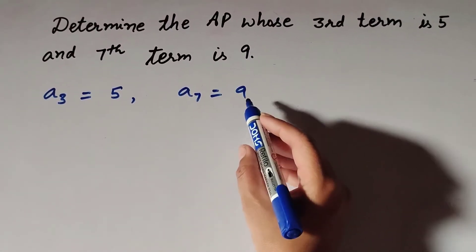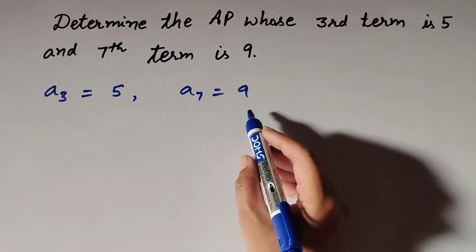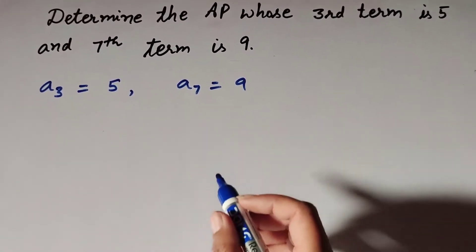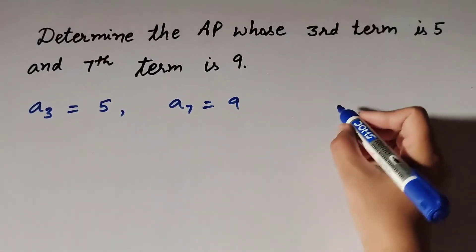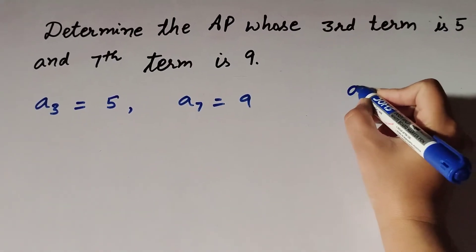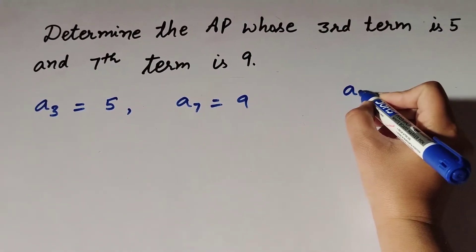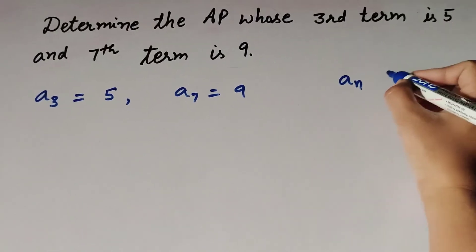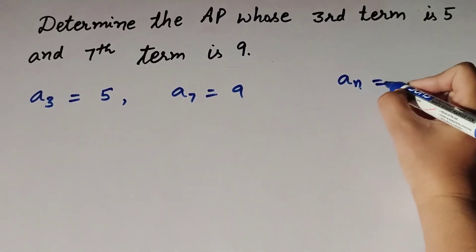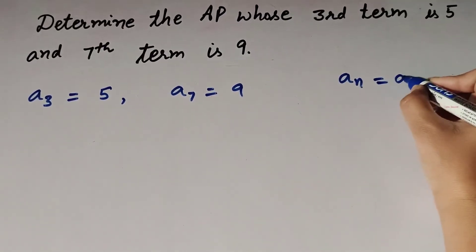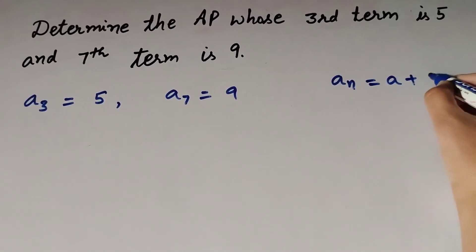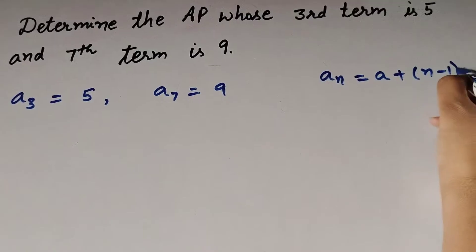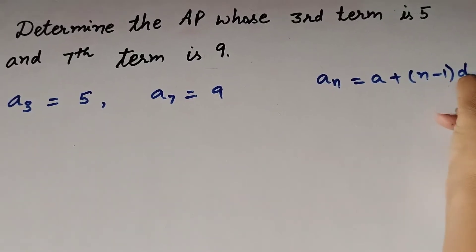To write the AP series, we need the first term and the common difference. So first we find the first term and common difference by using the formula: a_n is equal to a plus (n minus 1) times d. This is the formula to find the nth term.